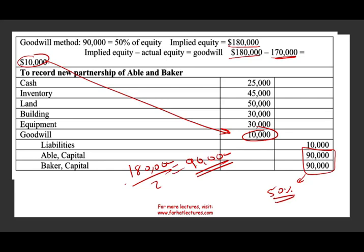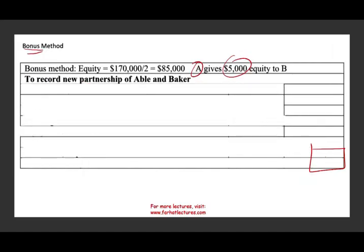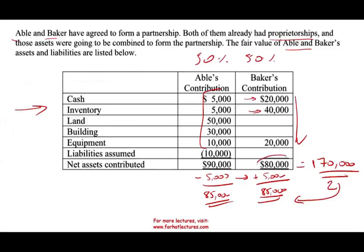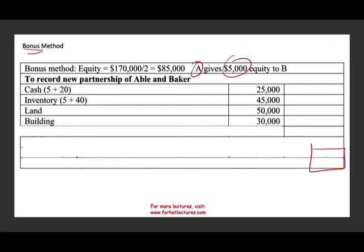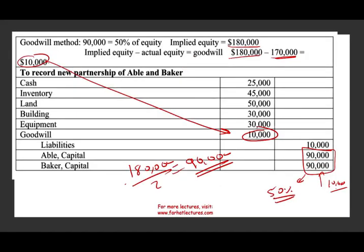Simply put, Baker got a benefit here — Baker received an additional $10,000 because Baker only contributed 80,000, but their capital is 90,000. This is the goodwill method.